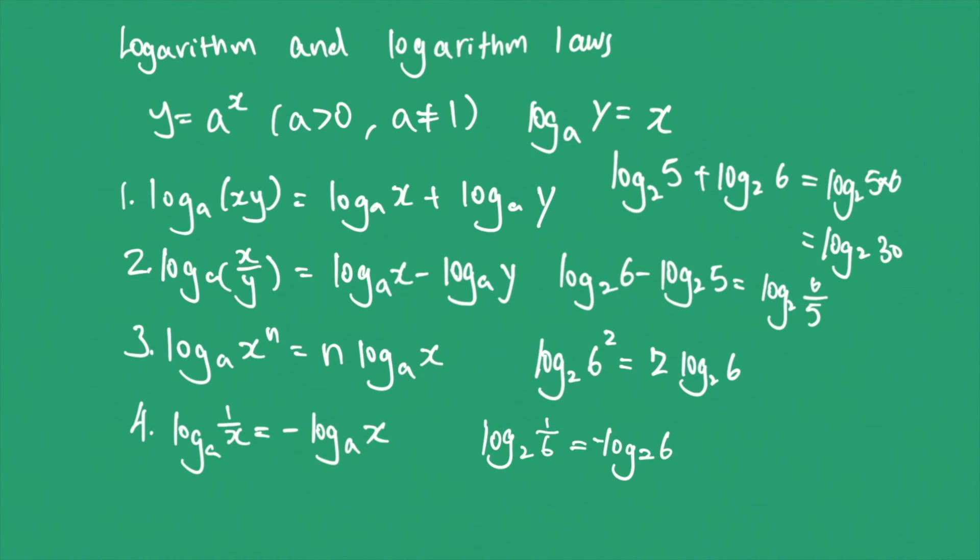The fifth law is log base a of 1 equals 0 and log base a of a equals 1. For example, log base 2 of 1 equals 0 and log base 2 of 2 equals 1.